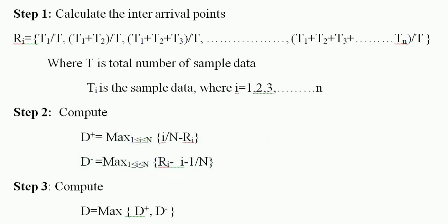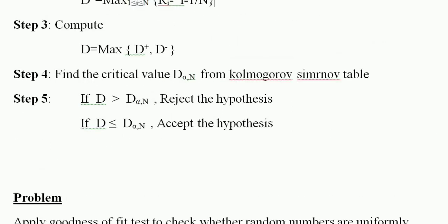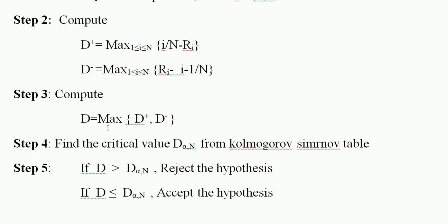In step 3, we compute the value D, which is the maximum of D+ and D−. Whatever values we calculated in step 2 — D+ and D− — whichever is the maximum value, that is called the value D.